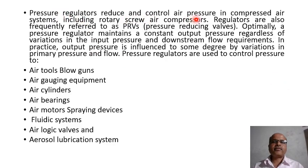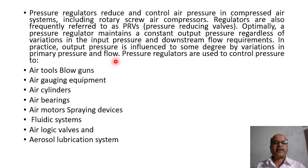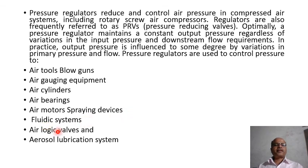Optimally, a pressure regulator maintains a constant output pressure regardless of variation in the input pressure and downstream flow requirements. In practice, output pressure is influenced to some degree by variation in primary pressure and flow. Pressure regulators are used to control pressure to blow guns, gauging equipment, air cylinders, air bearings, air motors, spraying devices, fluidic systems, air logic valves, and aerosol lubrication systems.